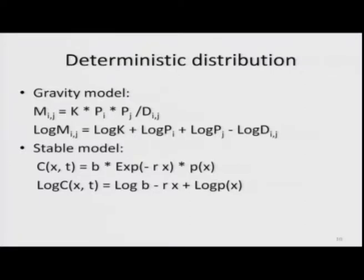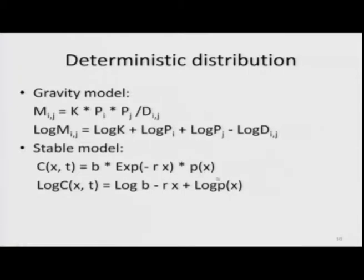An example of a deterministic distribution is the gravity model of migration: M_ij = k × P_i × P_j / d_ij, where P_i and P_j are populations of places i and j, and d_ij is the distance separating them. For fitting purposes — estimating k — you use log M = log k + log P_i + log P_j − log d_ij. The stable model is also deterministic: c(x,t) = b × e^(−rx) × p(x), or log c(x,t) = log b − rx + log p(x).